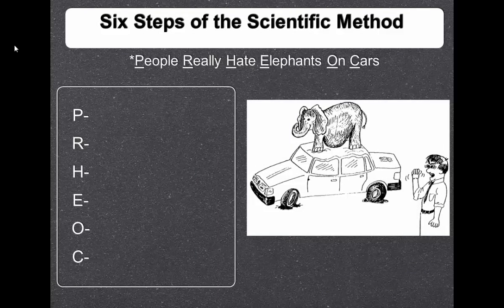All right. So, we are going to learn that there are six steps to the scientific method. Like I said, there's other ways to phrase these, and sometimes they're not in this order, but for us, we're going to say there are six steps to the scientific method, and you're going to have to memorize the names of them. But luckily, we have a way to help you remember those. And so, if we remember the sentence, people really hate elephants on cars, that can help us to remember the steps. Or you can remember this picture of Mr. Arcuri standing on top of the car. And that might help you to remember the steps. If you remember one of those things, then you can remember the steps. The first letter of each word stands for one of the steps. P-R-H-E-O-C.